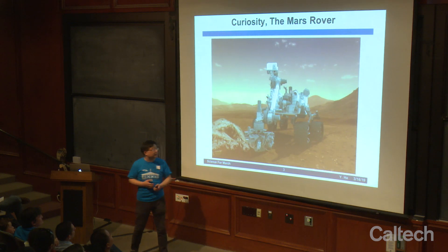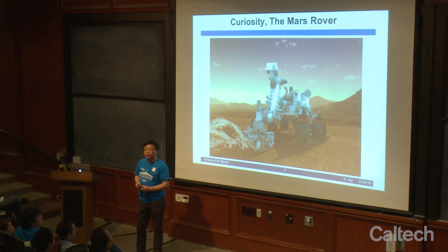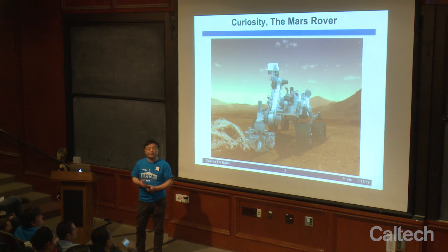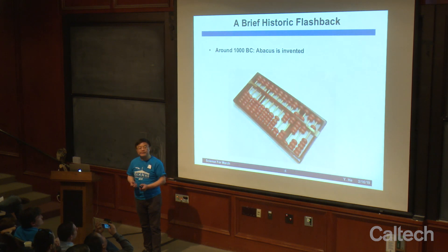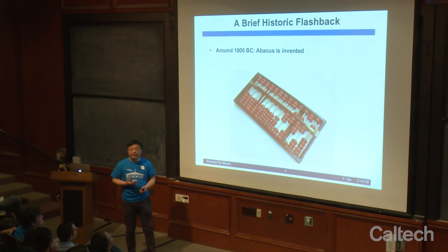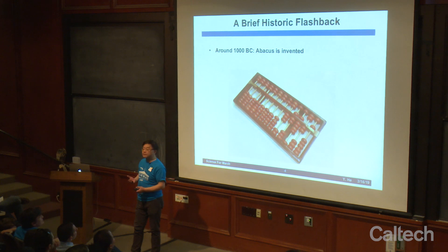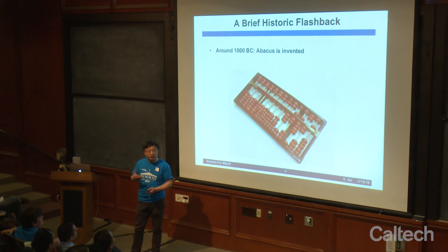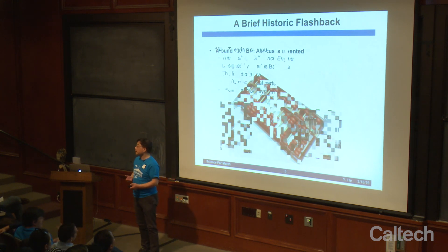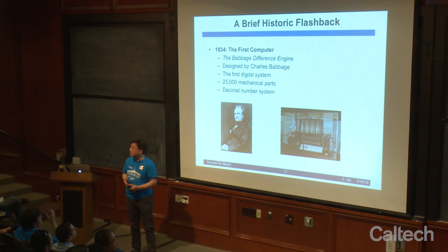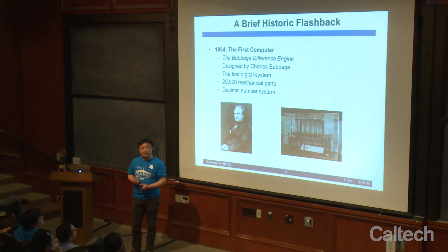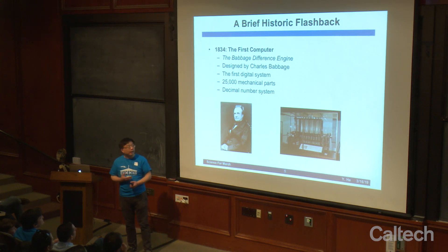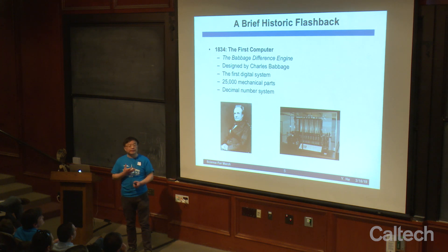Here is the Curiosity rover, currently still living on Mars doing explorations — representing some of the most advanced computer technology in the world. But it started literally with fingers. Then we had the abacus, or counting frames — tools to help us automate the counting process. From there, in the 1800s, the British mathematician Charles Babbage invented the first computer based on mechanical technology, designed to solve differential equations. But due to technology limitations, the Babbage machine was never built.